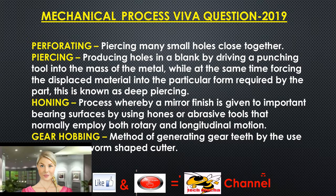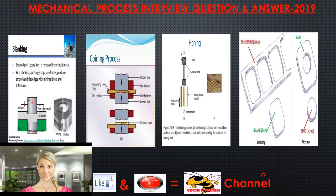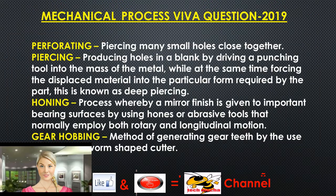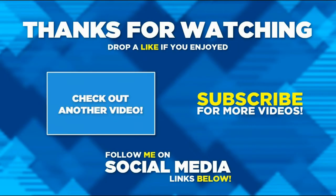Piercing is producing holes in a blank by driving a punching tool into the mass of the metal, while at the same time forcing the displaced material into the particular form required by the part; this is known as deep piercing. Honing is a process whereby a mirror finish is given to important bearing surfaces by using hones or abrasive tools that normally employ both rotary and longitudinal motion. Gear hobbing is a method of generating gear teeth. Thanks for watching — don't forget to subscribe, like, comment, and share our video.